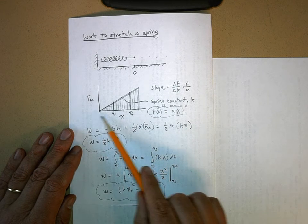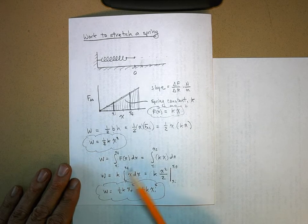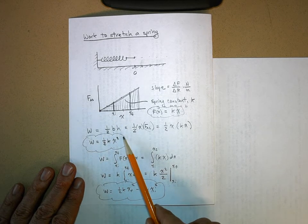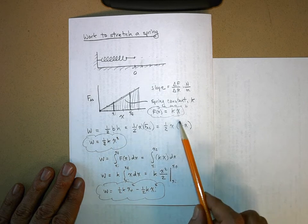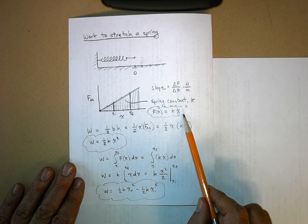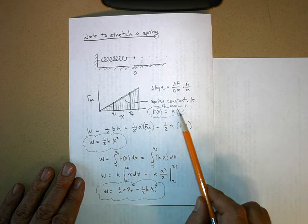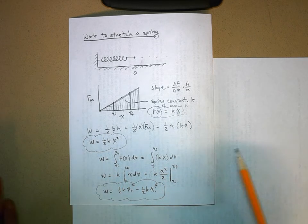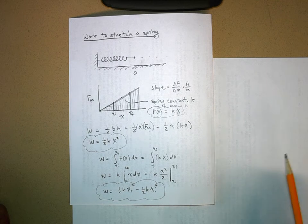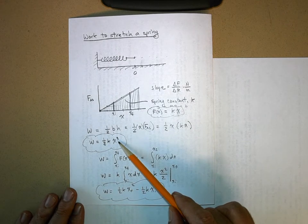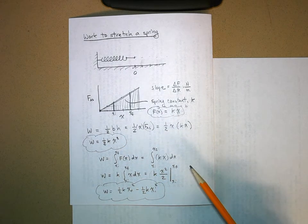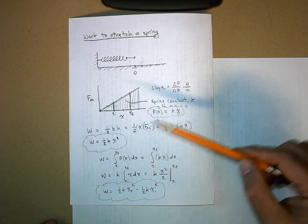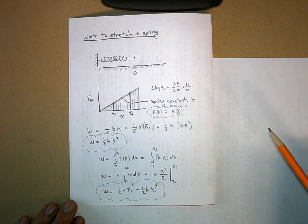Then we calculated the work underneath it by just saying, hey, it's a triangle, so one half the base times the height, and we plug this in for our height. Kx is the height of the triangle, and we get one half kx squared, and this is the work it takes to stretch a spring from its relaxed position to some position x. And by the way, this will also be true if you compress the spring as well as stretch it.